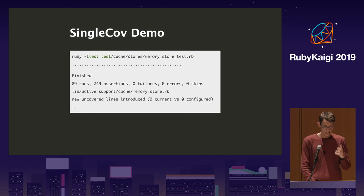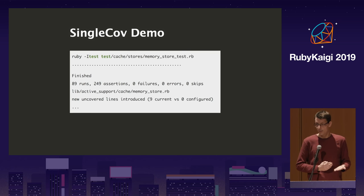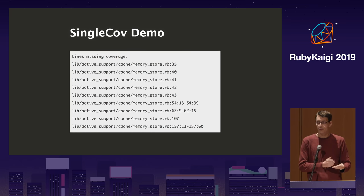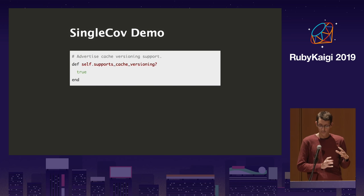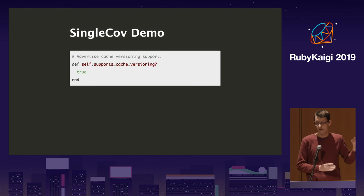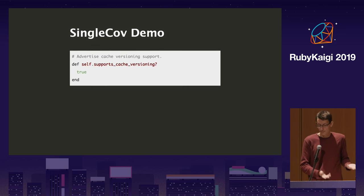For an example, I picked the memory store because I worked on it before. When you run the test, it fails because there are uncovered lines. The output shows a bunch of uncovered lines and three conditionals where one branch was uncovered. You get things like very trivial methods — you can argue whether you need to cover them, but you can either add an `# uncovered` comment or write a test that takes ten seconds. It's better to comment it than leave it undocumented.